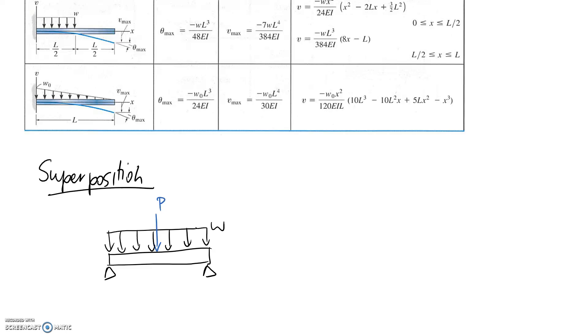What we can do is separate this into the two different cases which make it up. The first one would be the distributed load of W, and the second one would be just when we have the point load. What we can say is that this plus this equals this. That's what superposition is.